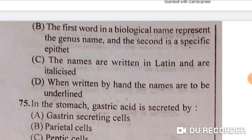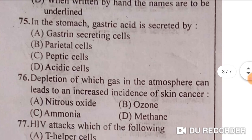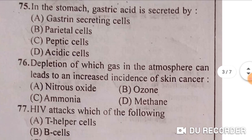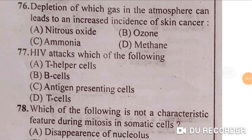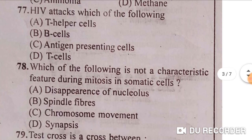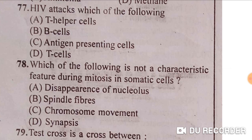In the stomach, gastric acid is secreted by parietal cells — option B is correct. Next: depletion of which gas in the atmosphere can lead to an increased incidence of skin cancer? Ozone — option B is correct. Next: HIV attacks which of the following? HIV attacks T-helper cells — option A is correct.